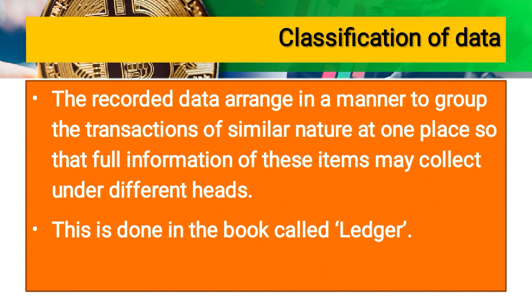Classification of data: transactions are grouped by nature. For example, all purchase transactions for one month are totalled together. Each type of account — such as salaries, sales, rent, and stationery — is recorded in a separate ledger account, with debit or credit balances maintained for each.